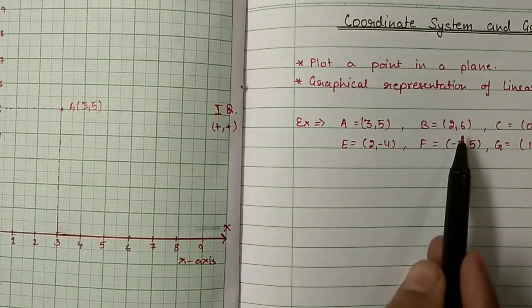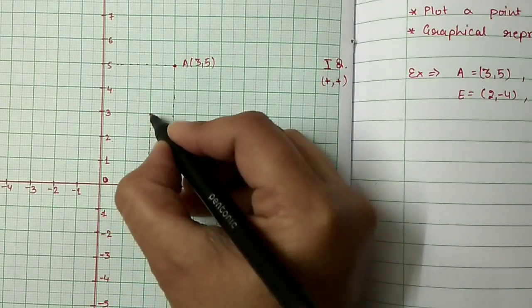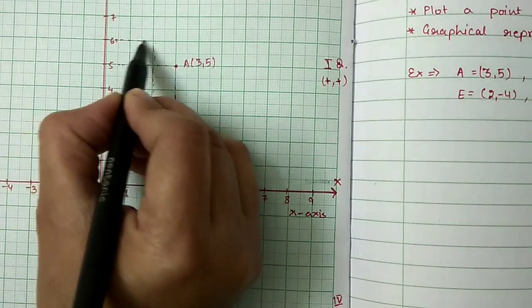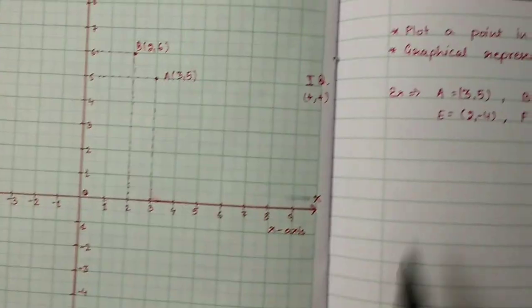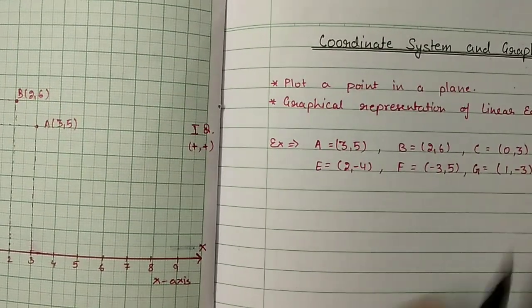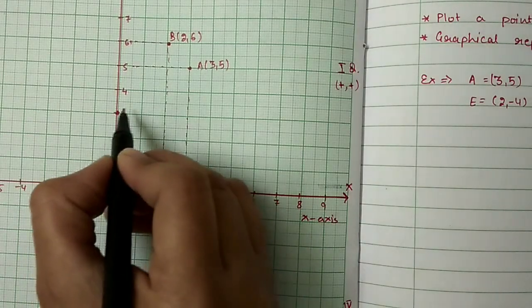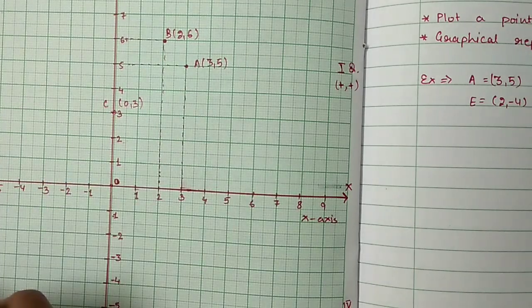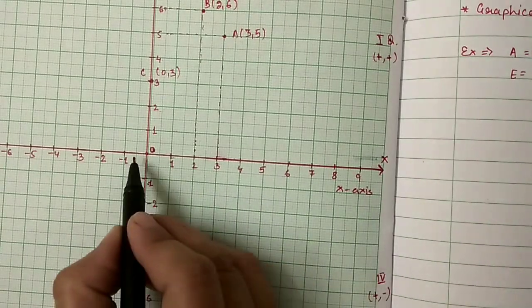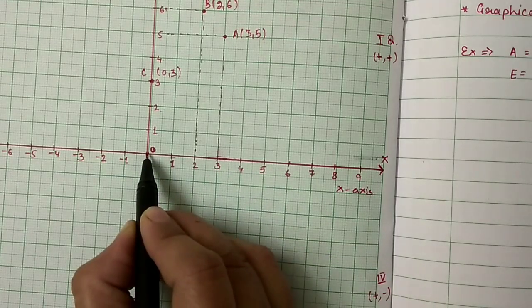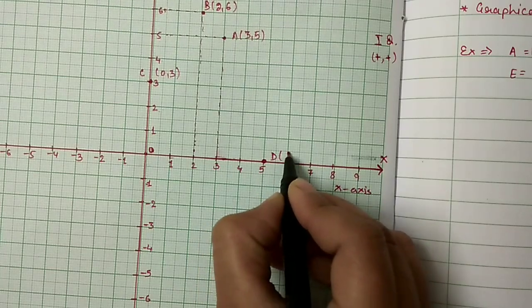The second point is (2, 6). Locate 2 on the x-axis and 6 on the y-axis. The next point is (0, 3): locate 0 on the x-axis and 3 on the y-axis — this is the position of C at (0, 3). Then point D is (5, 0): locate 5 on the x-axis and 0 on the y-axis. Since 0 is common to both axes, this point lies on the x-axis.